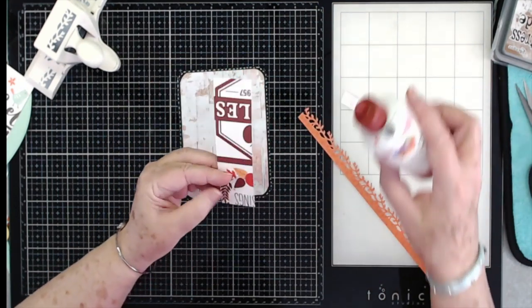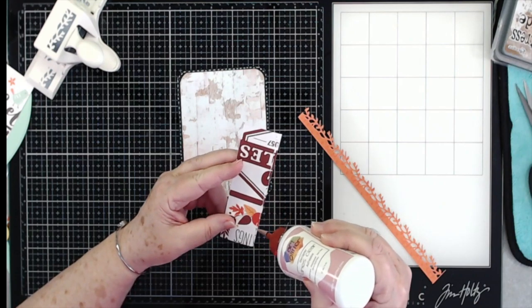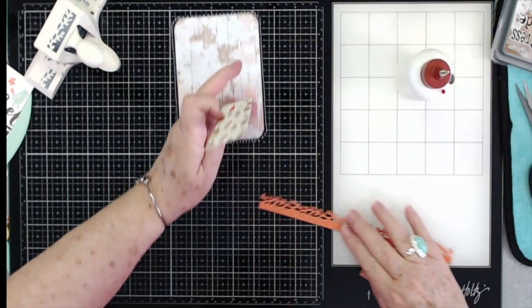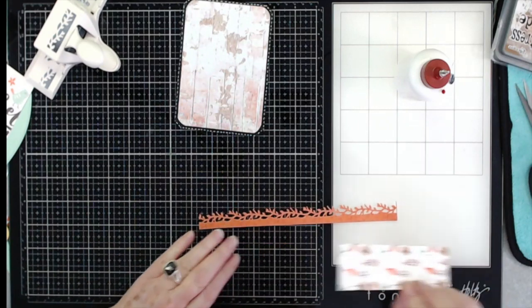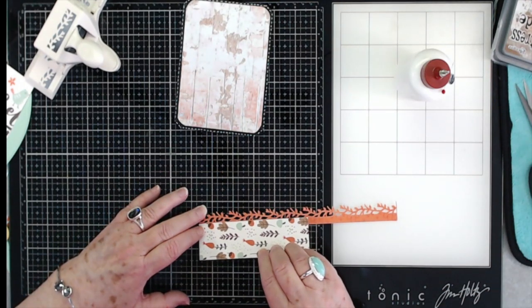So I'm just going to flip this over and put some glue on here. Then I'll lay this down and I'm going to lay it right up to the edge of where the branches start, right there.